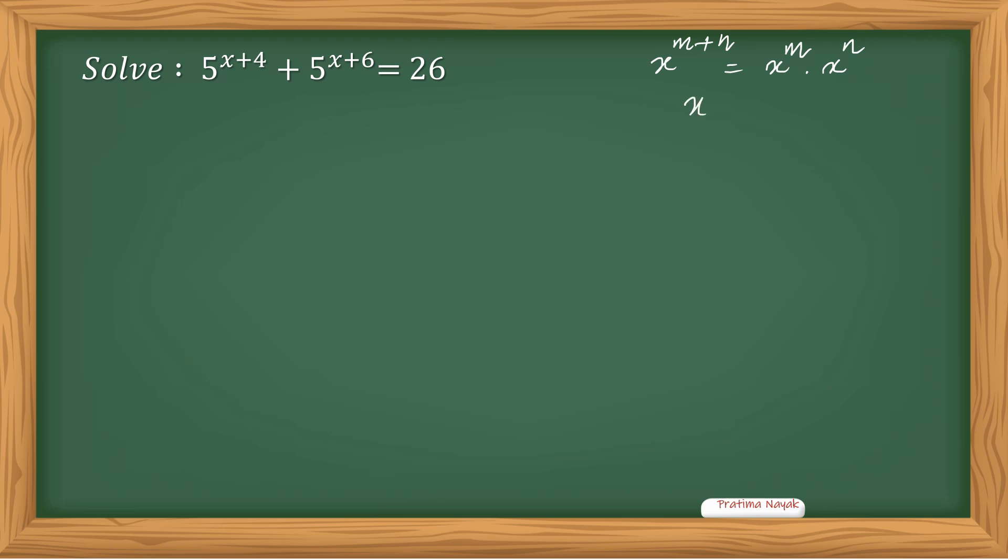So x plus 6 can be written as x plus 4 plus 2. I am writing the left hand side 5 to the x plus 4 plus 5 raised to the power x plus 6, which is x plus 4 plus 2, equals 26.